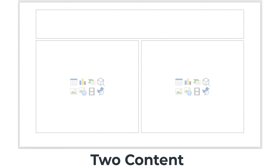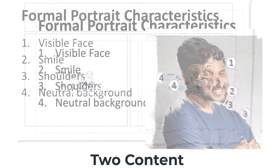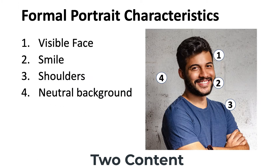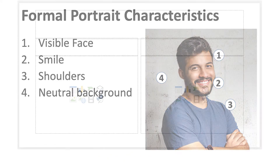The two content layout is like the title and content slide. It allows for two pieces of content to reside next to each other. The content in both placeholders can be similar like a bulleted list, or different like a list and a picture.